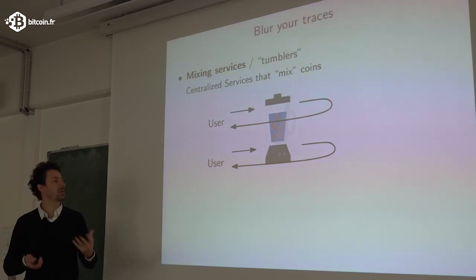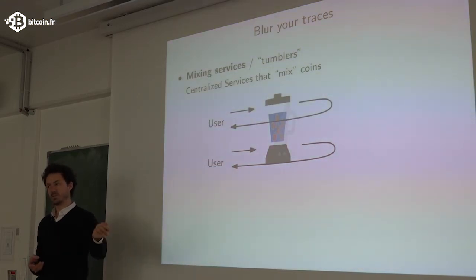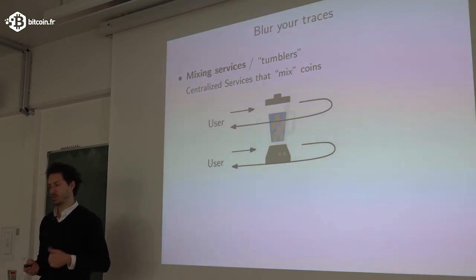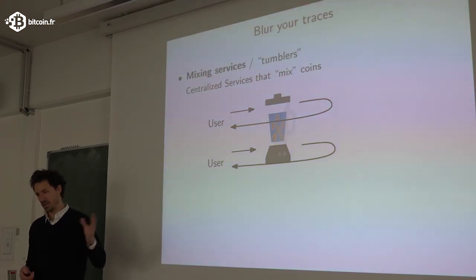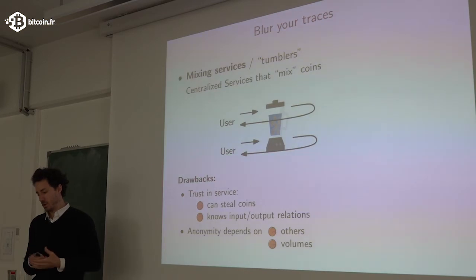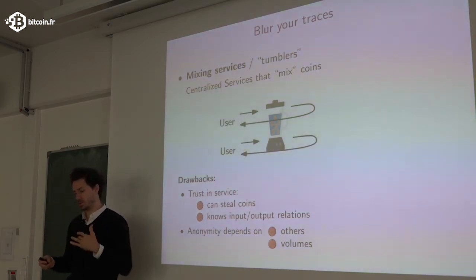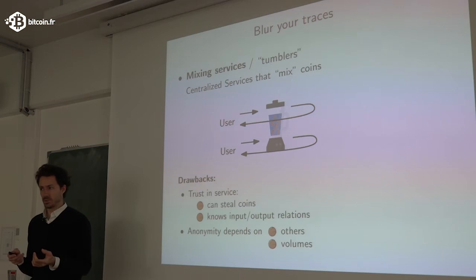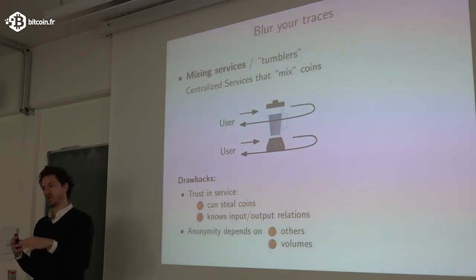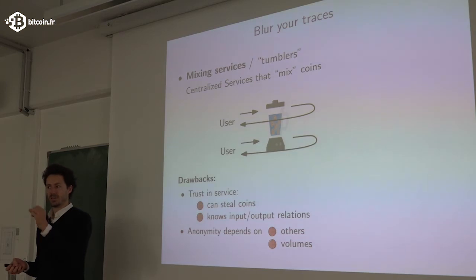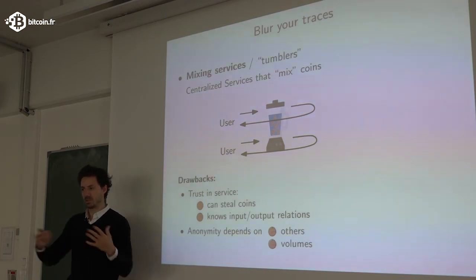How can we make Bitcoin more anonymous? The first approach was using mixing services, where you send a service your coins and get different coins back, hoping you get coins back and that they're unrelated. There have been plenty of thefts. The drawbacks are obvious: you have to trust the service, which could steal your coins, and even if it doesn't, it knows which coins went where. Furthermore, your anonymity depends on the others — if all the other coins sent in belong to the FBI, they know which coins you received because they're the ones they didn't get.